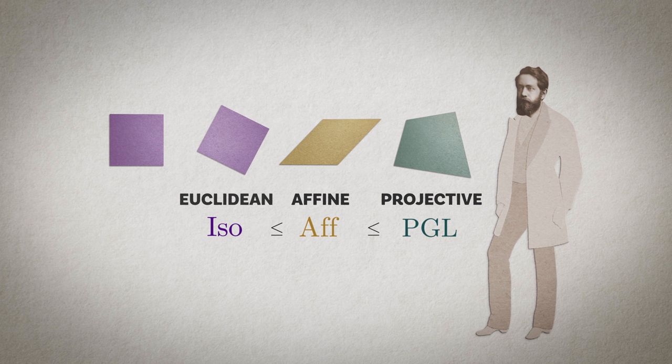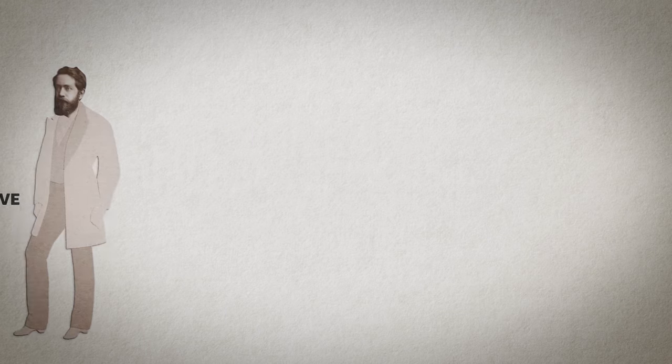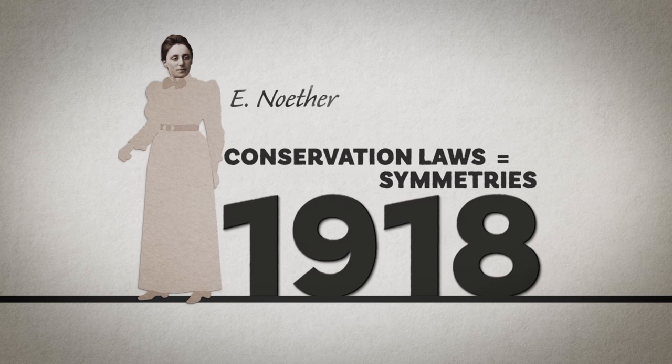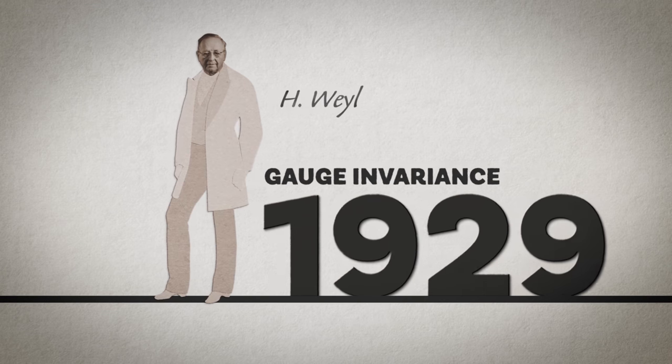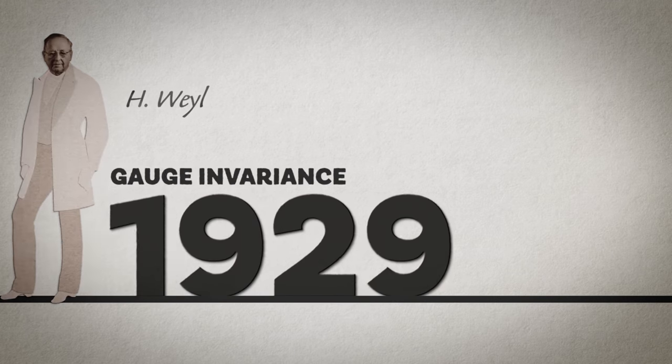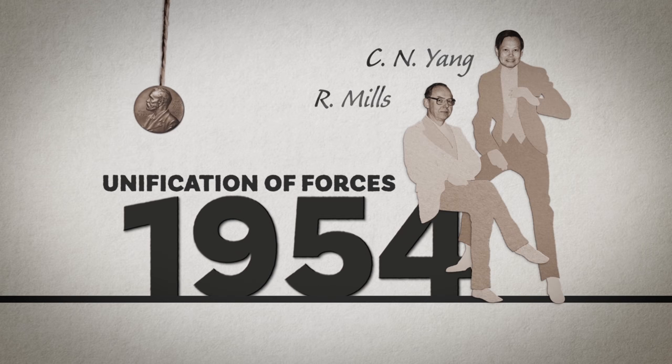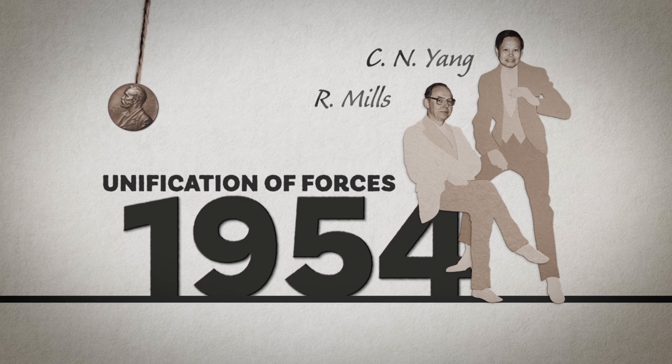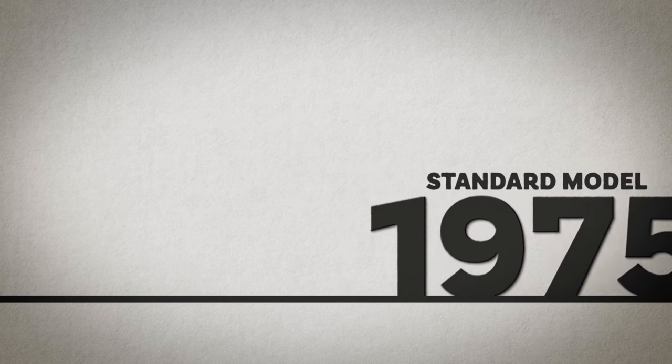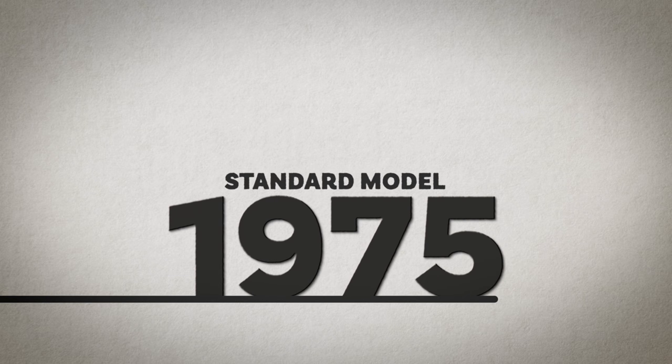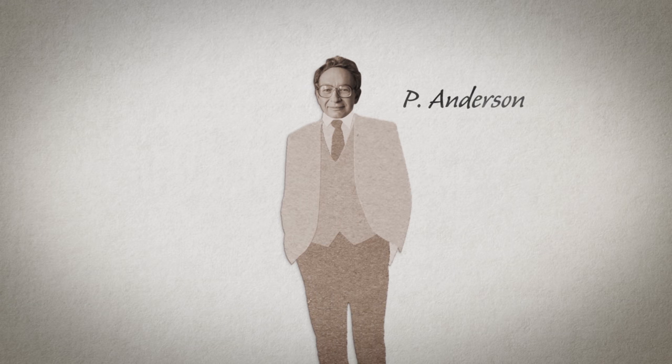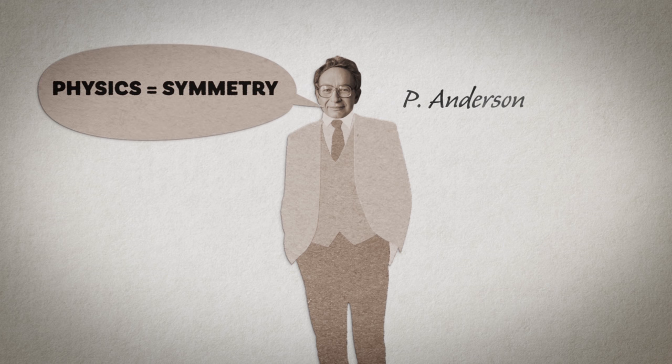The impact of the Erlangen program on geometry and mathematics in general was very profound. It also spilled into other fields, especially physics, where symmetry considerations allowed to derive conservation laws from first principles, known as Noether's theorem. Through the notion of gauge invariance developed by Yang and Mills in 1954, it proved successful in unifying all the fundamental forces of nature except gravity. This is the standard model describing all the physics we currently know. It's only slightly overstating the case to say that physics is the study of symmetry.